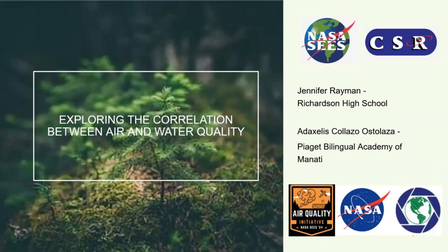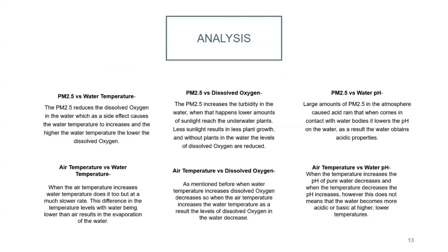Hi, my name is Jennifer Raymond and I'm from Richardson High School. In the analysis of our data, we have PM2.5 versus water temperature: as PM2.5 reduces the dissolved oxygen in the water, it causes the water temperature to increase, and the higher the water temperature, the lower the dissolved oxygen. We also have PM2.5 versus dissolved oxygen: PM2.5 increases the turbidity in the water, and when that happens, there's not enough sunlight that can reach the underwater plants.